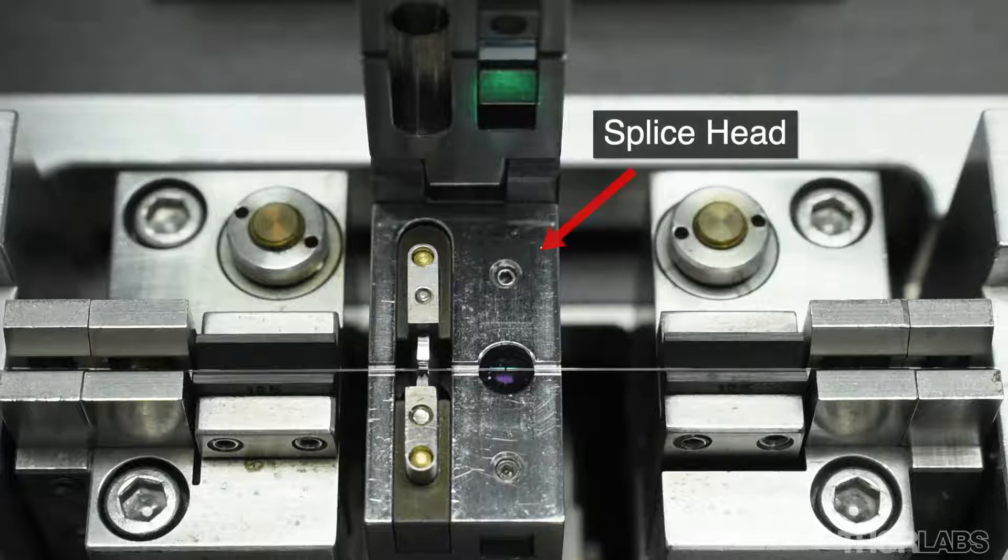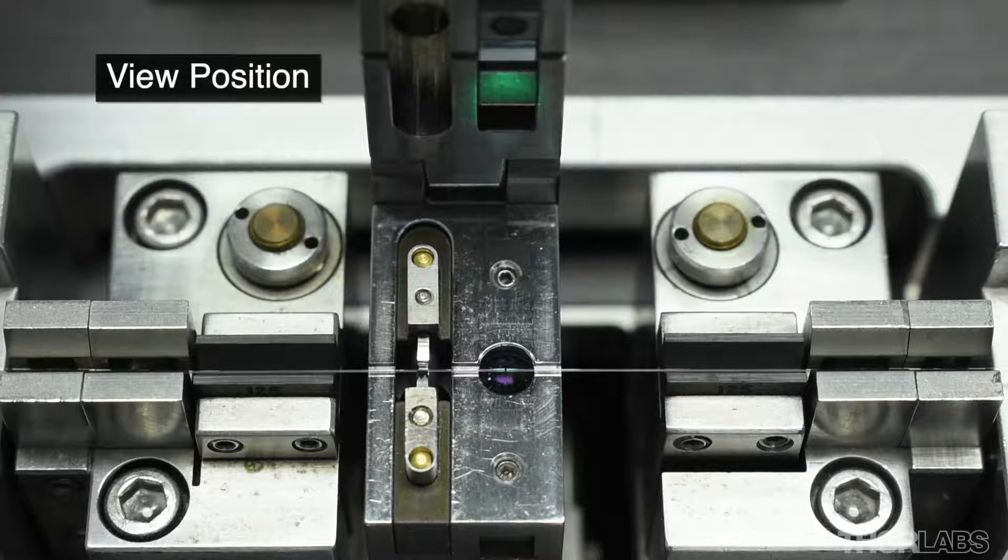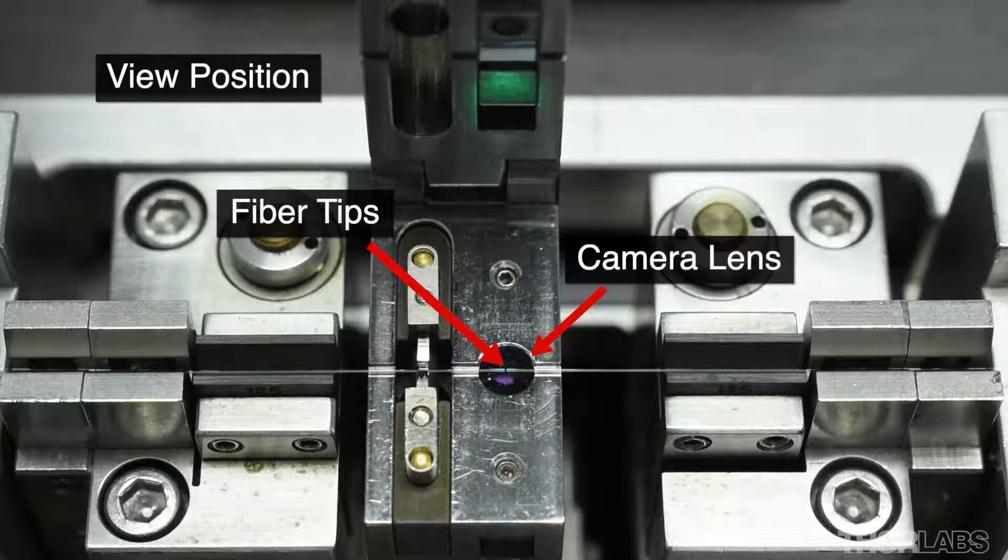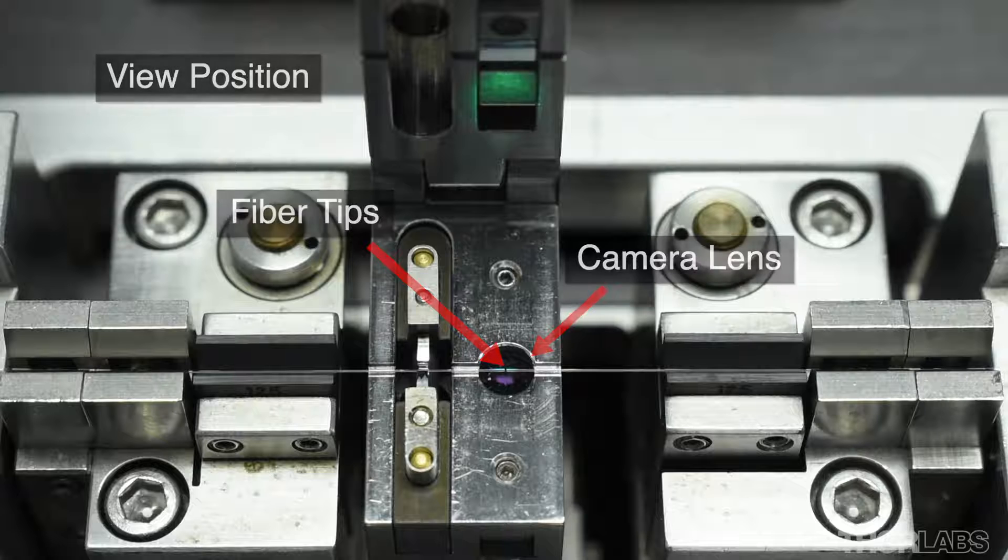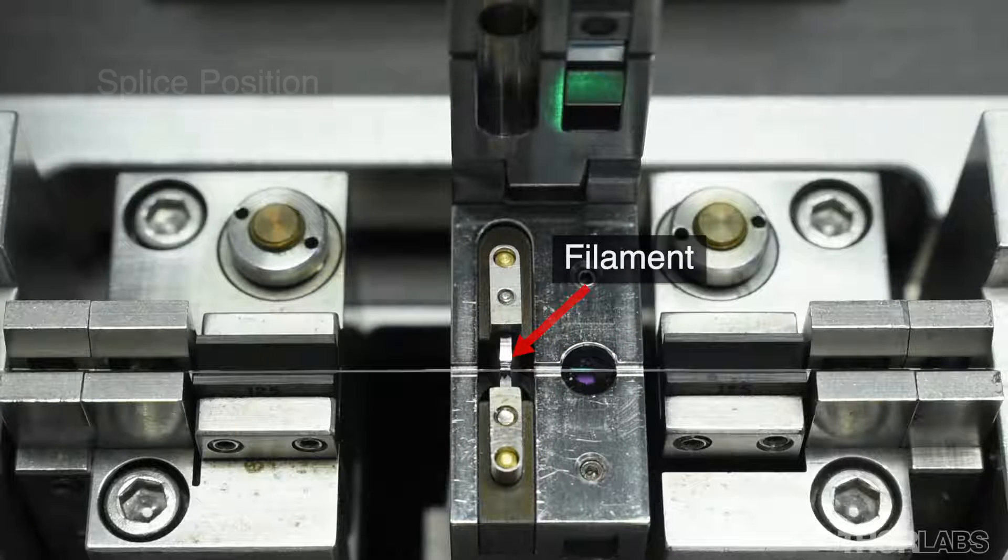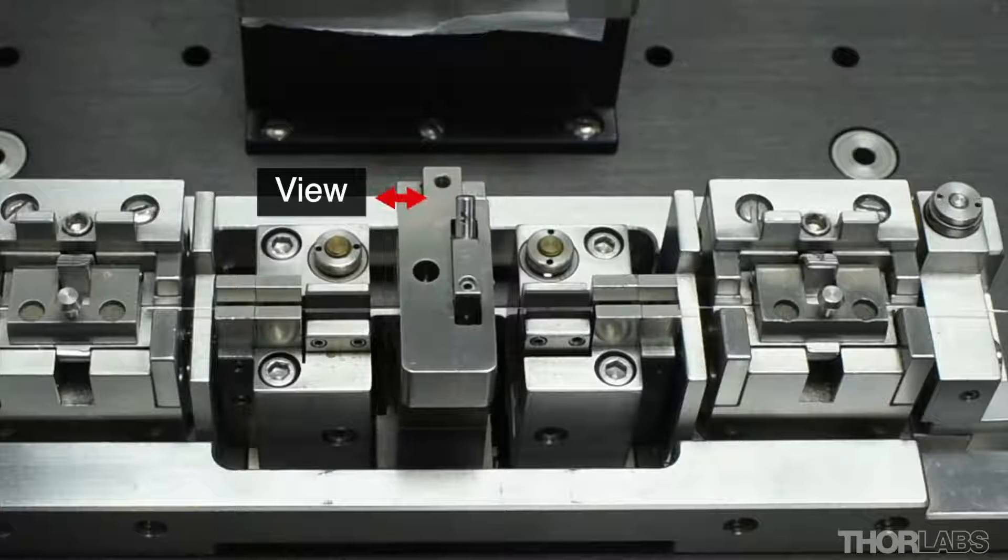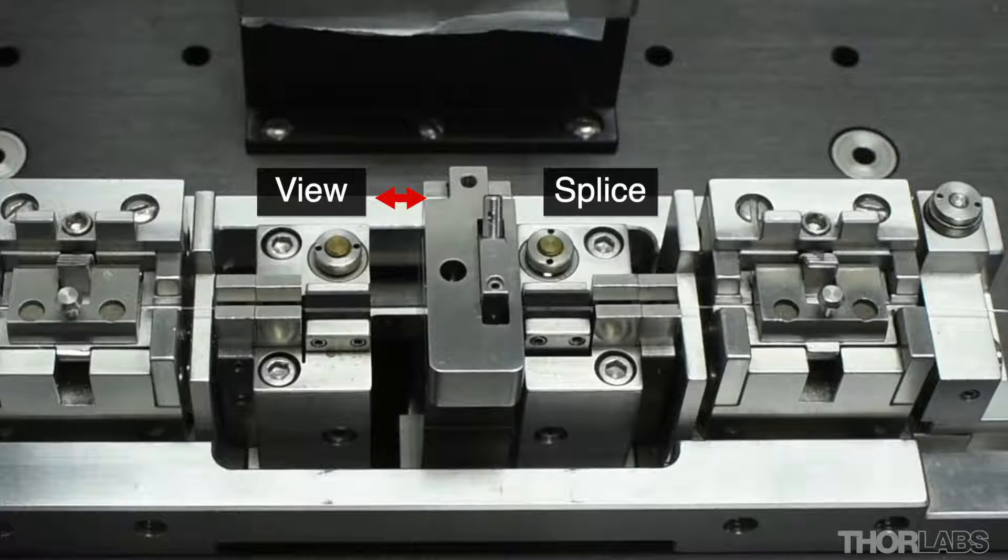The view to splice distance determines how far the splice head moves from its view position, where the camera lens is directly under the fiber tips, to the splice position, where the filament is positioned at the fiber tips. Typical values will be about 4000 to 5000 microns.